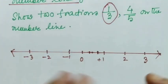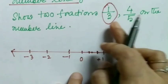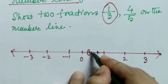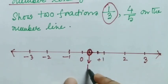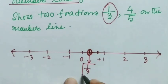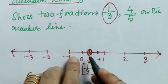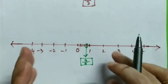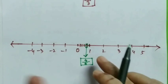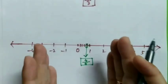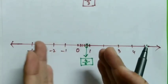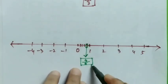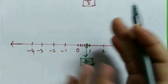Now, 1 out of 3 means this point will be our 1 divided by 3. Similarly, for 4/5: we divide between 0 and 1 into 5 equal parts, and 4 parts out of these 5 parts represent the fraction 4 divided by 5. So let's move on to the next topic.